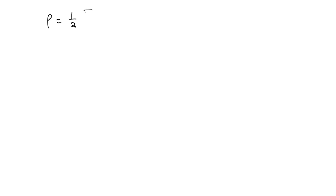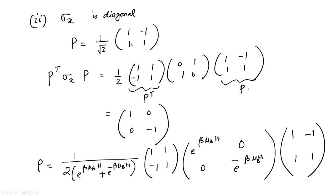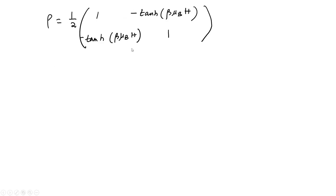In this new representation, the density matrix has the form rho = (1/2) * [[1, -tanh(beta*mu_B*H)],[-tanh(beta*mu_B*H), 1]] (divided by appropriate normalization). This form is very different from what we obtained in the sigma_z diagonal case — here all elements including off-diagonal ones are present, whereas there we had exponential terms only on the diagonal.